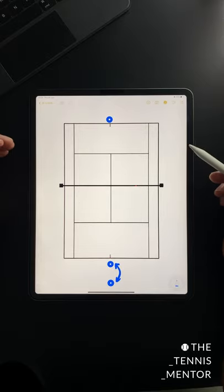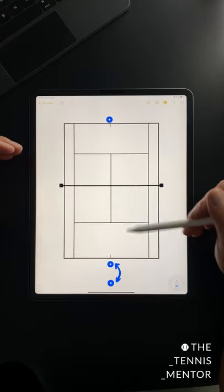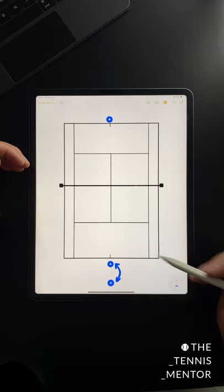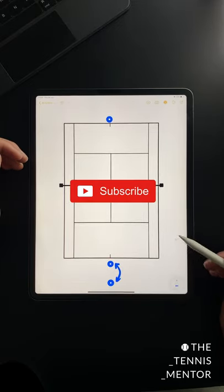And the final option is ping pong doubles. This is exactly the same layout as we had before, however, these players swap places after every shot. Give these drills a go when one of your doubles team doesn't turn up, and let me know how you get on.